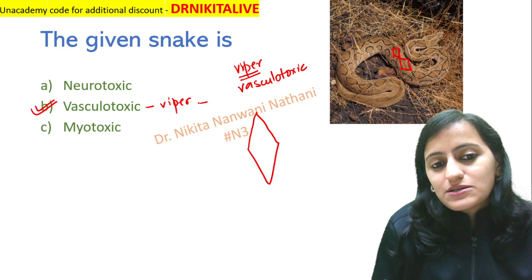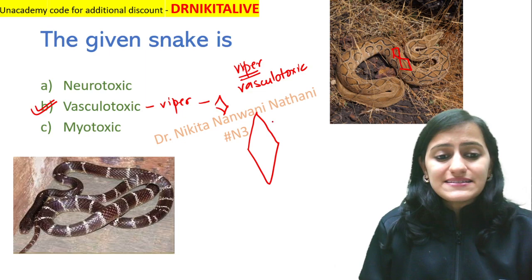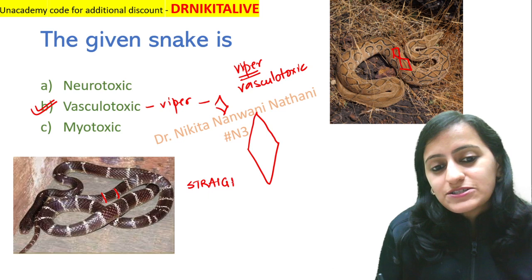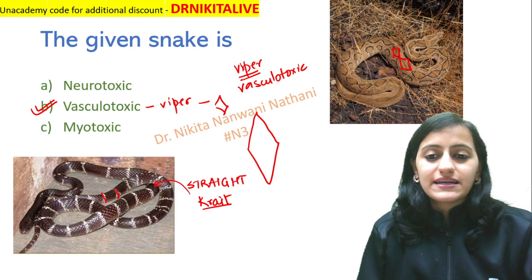What snake is this? In this snake, we are seeing straight bands. Remember, 'straight' rhymes with 'crate.' So this is a krait. This is a krait, and the previous one is a viper. I hope this mnemonic helps you remember the snake identification.